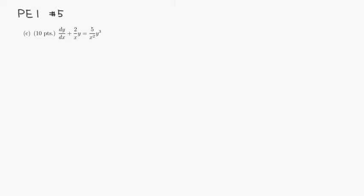Let's look at practice exam one, problem number five, part C. We're going to solve this Bernoulli equation. We'll use a substitution. This equation is almost linear, but because of the y cubed term, it's not linear anymore.